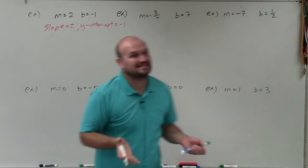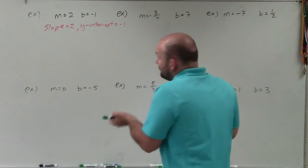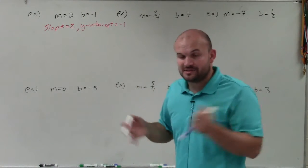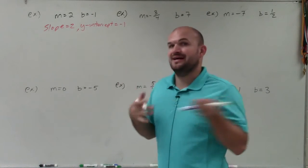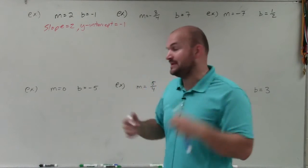Basically, this is the exact same thing. So m represents your slope and b represents your y-intercept. So if you have a problem with slope and y-intercept, that's the same thing as given m and b.